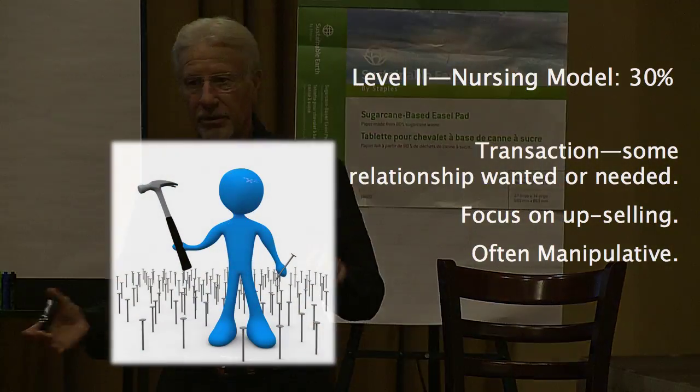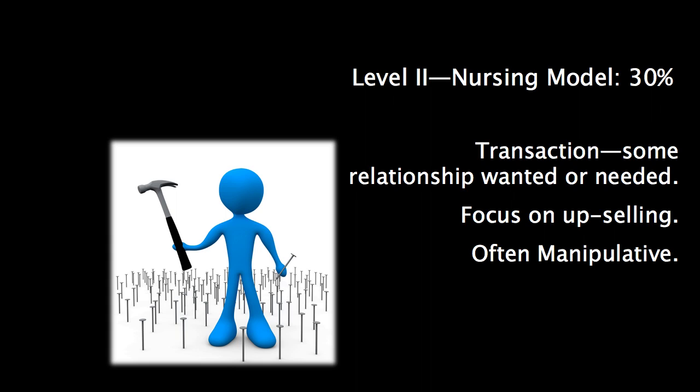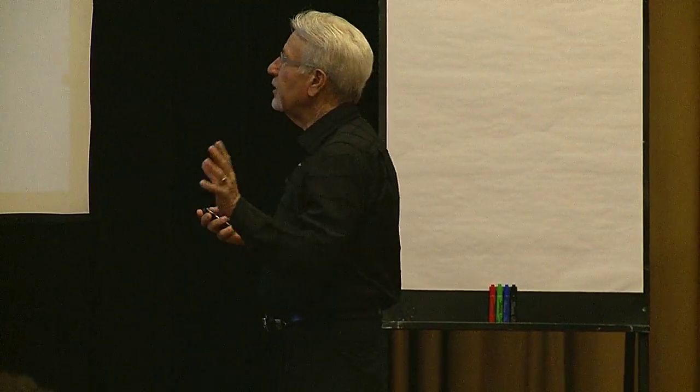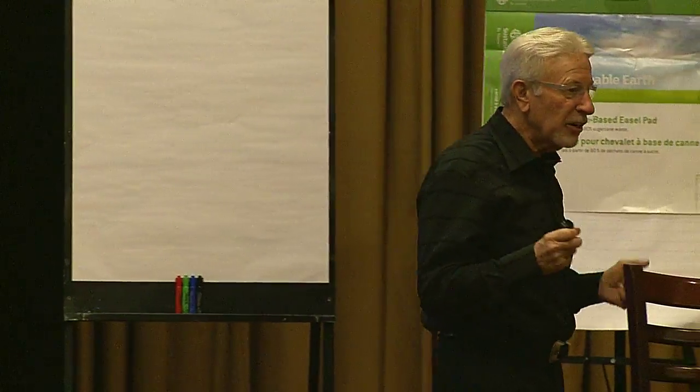There's another level — level two. The difference between level one and level two is the level-two dentist generally has more advanced training. All specialists are included in this group. They've got a bigger hammer, so they look at everybody as a nail. They need just enough of a relationship to sell the dentistry — they don't really need to care about them deeply. That represents about 30% of dentists in the country.